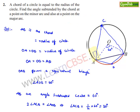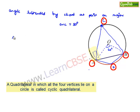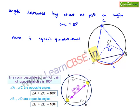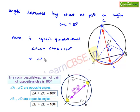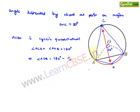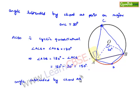Now if we consider the figure, ACBD forms a cyclic quadrilateral since it is completely enclosed in the circle. We know that in a cyclic quadrilateral the sum of opposite angles is equal to 180 degrees. Therefore angle ACB plus angle ADB equals 180 degrees, which gives angle ADB equals 180 minus 30 degrees, that is 150 degrees. Therefore the angle subtended by chord AB on the minor arc is 150 degrees.